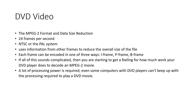The MPEG-2 encoder analyzes each frame and decides how to encode it. The compression uses technology similar to still image compression to eliminate redundant or irrelevant data, and uses information from other frames to reduce the overall file size. There are two types of redundancy: spatial redundancy, exploited by intra-frame prediction, and temporal redundancy, exploited by P-frames or B-frames. Each frame can be encoded as an I-frame, P-frame, or B-frame.